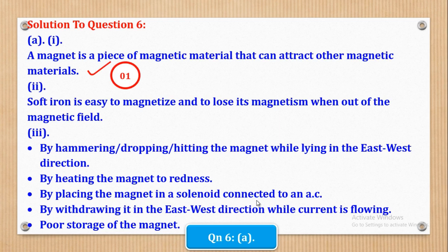Now let's see how marks can be awarded. So definition of a magnet, that is one mark. Then reason why keepers are used, why keepers use soft iron, that is one mark. And also for this, any two reasons, it is okay. So choose any two and write those ones.